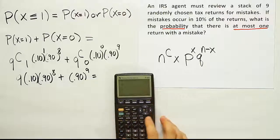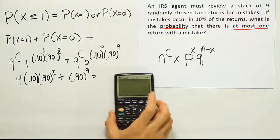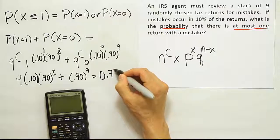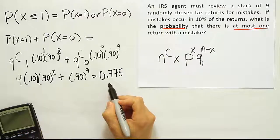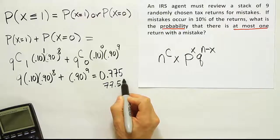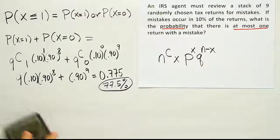Let's finish this up. Nine times 0.1 times 0.9 to the eighth plus 0.9 to the ninth. And when we're done, we get 0.775. Or in other words, the answer is 77.5%. What's the probability when you look at nine returns that you find at most one mistake in the batch? 77.5%.